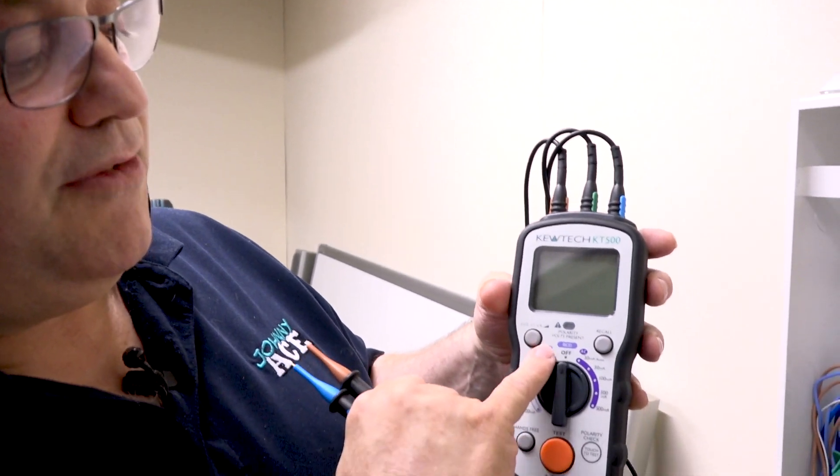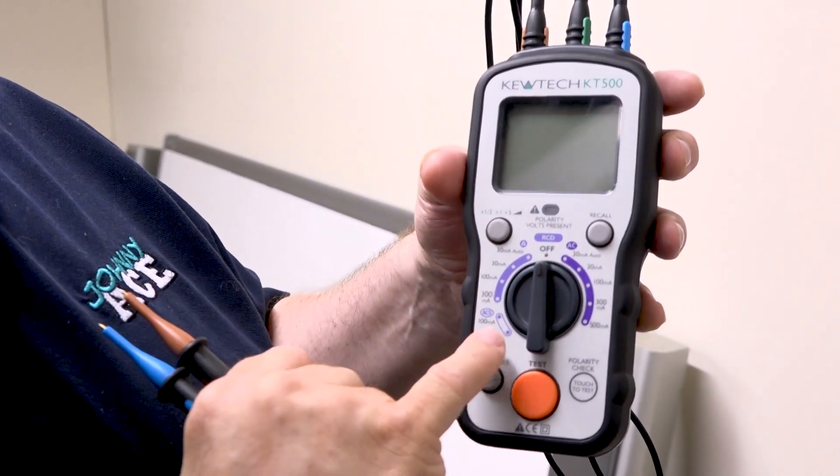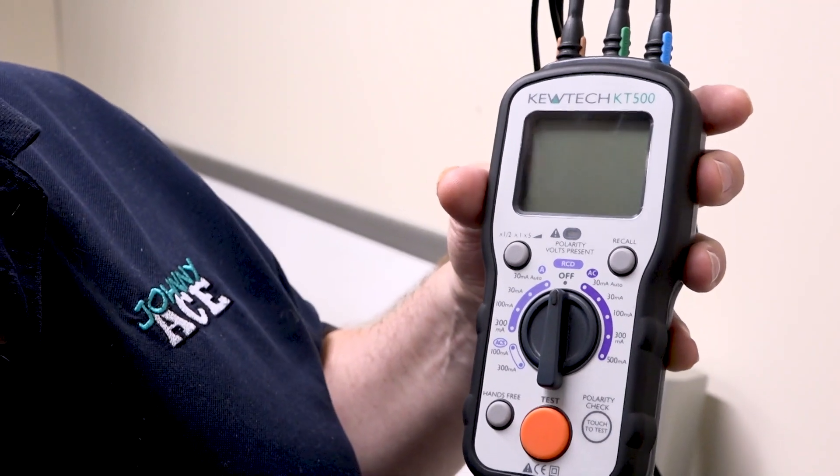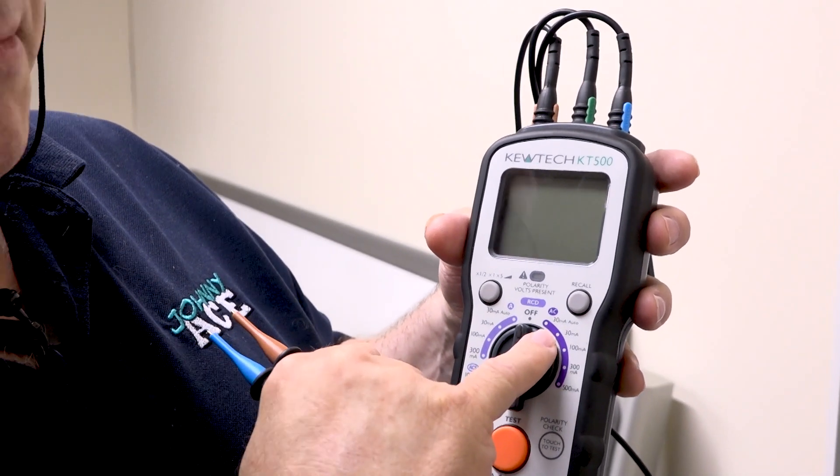So we're running a short demonstration testing an RCBO unit in this board here. It's a Type AC unit, and if you look at the tester you'll see you've got Type A, Type AC, and Type S. So we'll be using the Type AC side there, and we're going to be doing it in the auto mode because it's a 30 milliamp. Okay, so let's have a go.